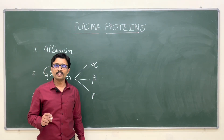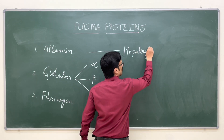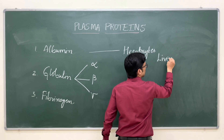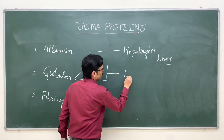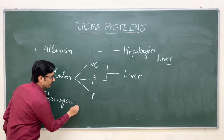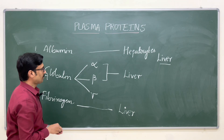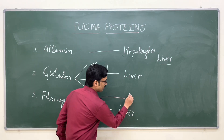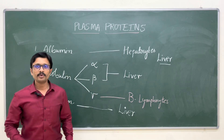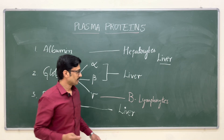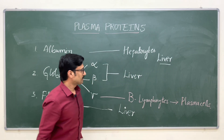Now let us see from where these plasma proteins are synthesized. Albumin is mainly synthesized from the hepatocytes of the liver — hepatocytes are the liver cells. Globulins, mainly alpha and beta, are from the same hepatocytes of the liver. Fibrinogen is also synthesized from hepatocytes of the liver, along with other coagulation factors. But gamma globulins are an exception — they are synthesized from B lymphocytes, which differentiate into plasma cells, and these plasma cells actually synthesize the immunoglobulins or antibodies.